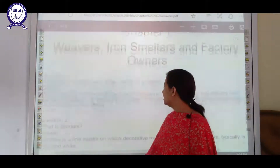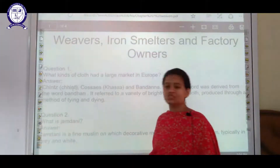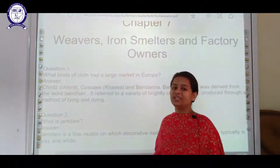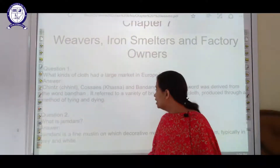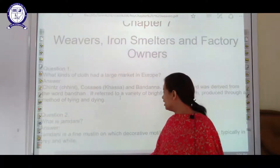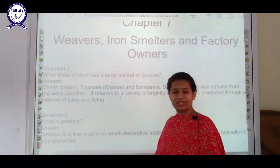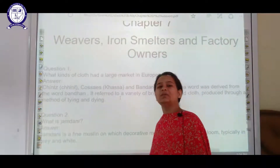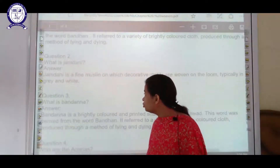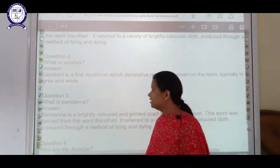Our first question is: what kind of clothes had a great market in Europe? That is chintz. I already discussed that in detail while we were doing the chapter. Bandana and many more examples were discussed, which followed different flowered patterns and the pattern of tying and dyeing as well.